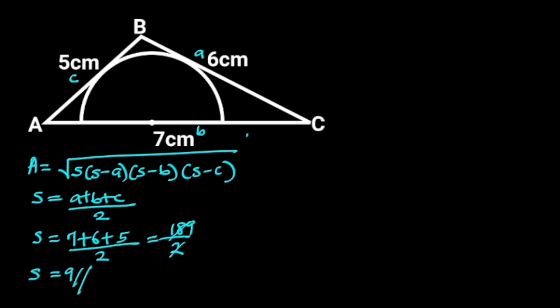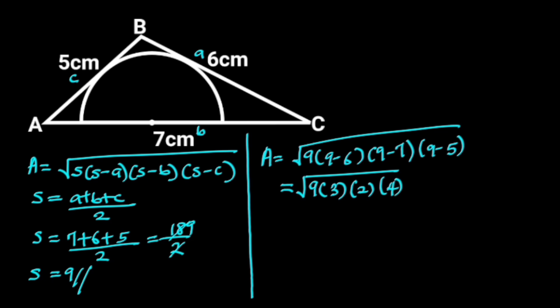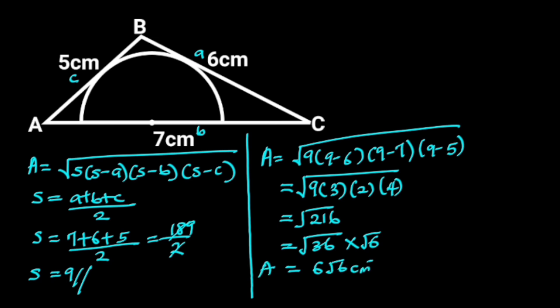Let's go ahead and find the area of triangle ABC. The area of triangle ABC will be the square root of 9 times (9 minus 6) times (9 minus 7) times (9 minus 5). Simplifying gives us the square root of 9 times 3 times 2 times 4, which is the square root of 216. The square root of 216 can be further simplified as the square root of 36 times the square root of 6. Since the square root of 36 is 6, the area of triangle ABC is 6√6 square centimeters.